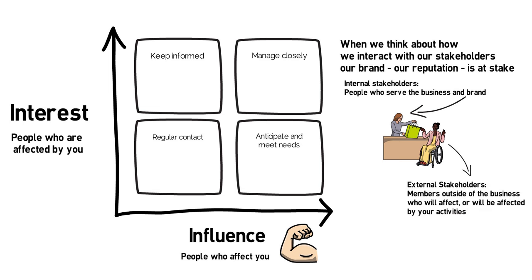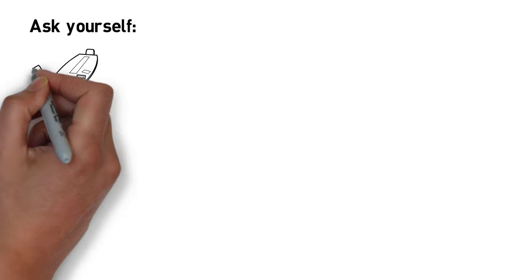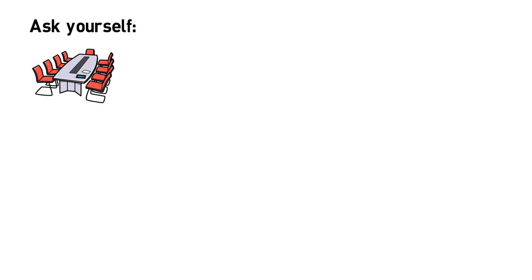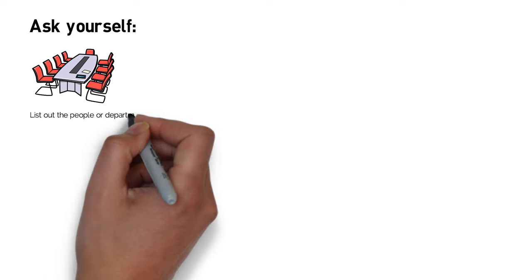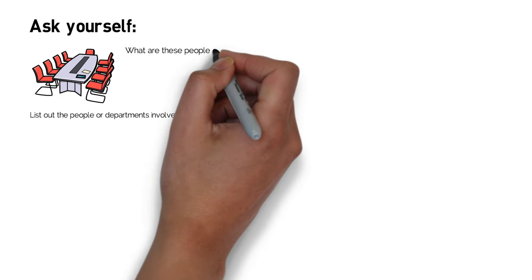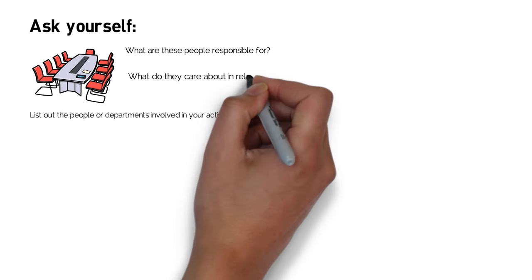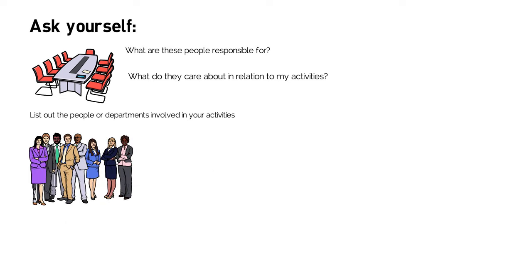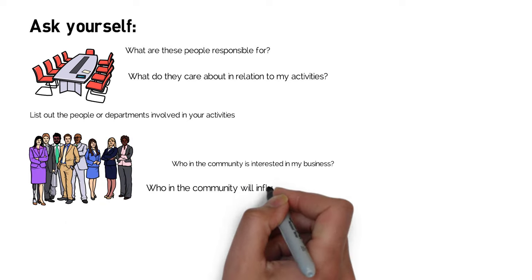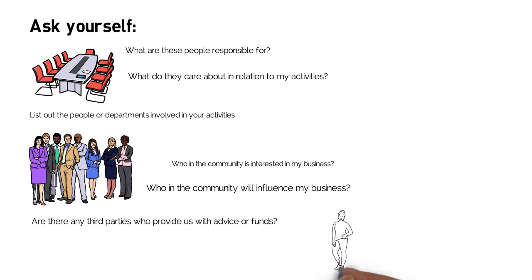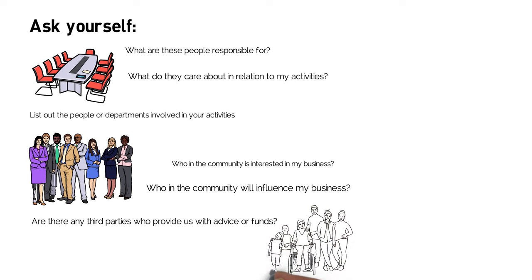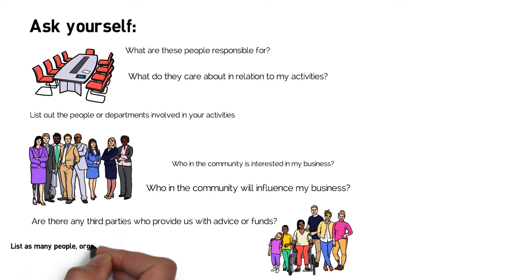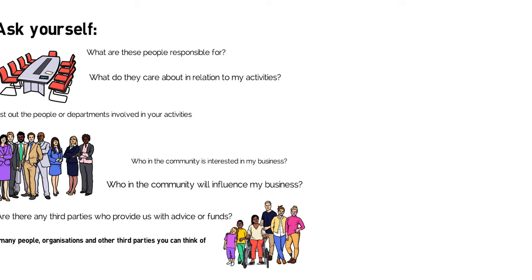When it comes to actually drawing out your stakeholder map, before you just start plotting people randomly on the map, it's important to ask yourself a few questions. I usually find it's really helpful to start by listing out the people or departments involved in the activities. Then look at what are these people responsible for, and what do they care about in relation to my business, my brand, my activities? For external stakeholders, ask questions like: who in the community is interested in my business? Who in the community will influence my business? And are there any third parties who provide us with advice or funding? List as many people, organisations, and other third parties you can think of before you start plotting where they sit within these four quadrants on your key stakeholder map.